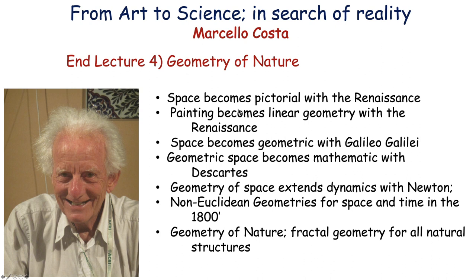I come to the end of part 4, the geometry of nature. To summarize the series: space became pictorial with the Renaissance, painting became linear geometry with the Renaissance, space became geometric with Galileo Galilei, geometric space became mathematics with Descartes, geometry of space extends to dynamics with Newton, then non-Euclidean geometry for space and time was applied in the 1800s, and the geometry of nature — fractal geometry — applies to all the natural structures around us. This will allow me now to go on to investigate the relation between geometry and dynamics. I'll see you next time.